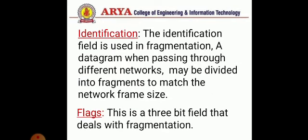The next field is identification, which is used in fragmentation. When data passes through different networks, it may be divided into fragments to match the network frame size. When this happens, each fragment is identified with a sequence number — a sequence number that, together with the source address, destination address, and protocol, uniquely identifies a datagram.